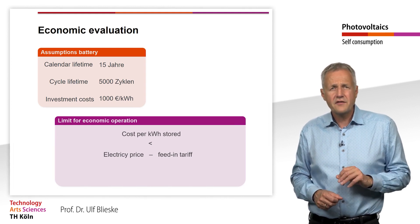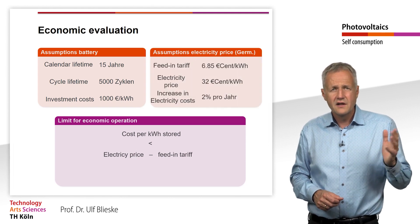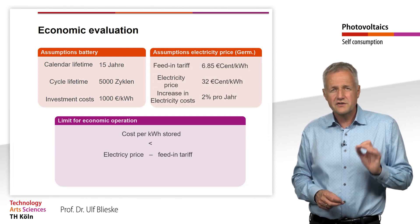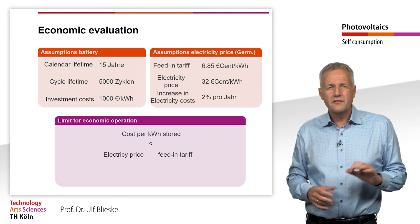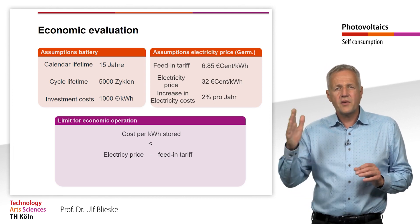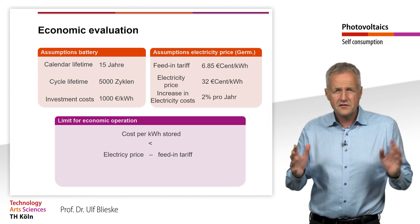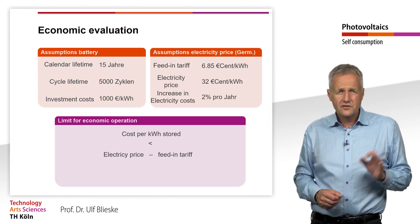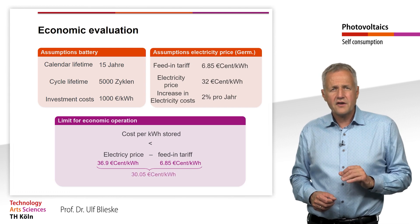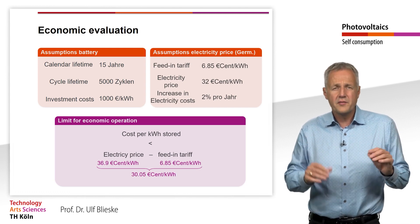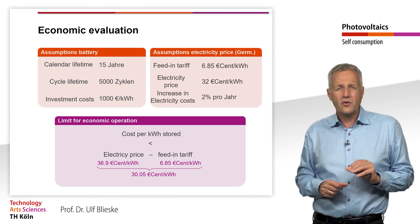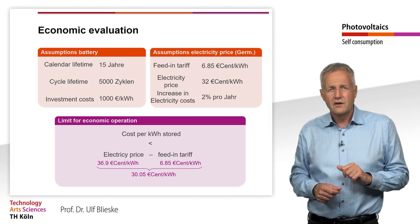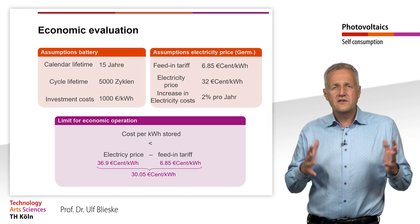For Germany, the feed-in tariff for a small self-consumption system is currently 6.85 EUR per kWh. The electricity price in 2022 is 32 EUR per kWh. If we assume that the electricity price will increase by an average of 2% per year over the next 15 years, we get an average electricity price of 36.9 EUR per kWh. The electricity cost of the battery storage system should therefore be below 36.9 minus 6.85 EUR per kWh, thus just under 30 EUR per kWh, so that it pays for itself within the assumed lifetime.